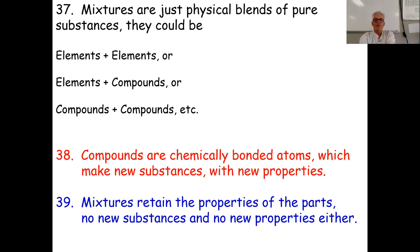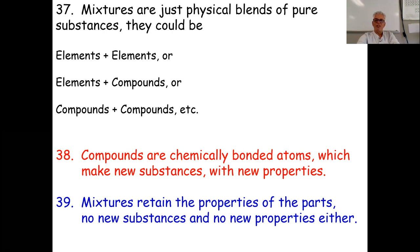Mixtures are just physical blends of stuff. A compound, on the other hand, is chemically bonded — atoms are bonded together. For methane, CH4, one carbon bonds to four hydrogens. Methane has certain properties: it burns, it's a gas at room temperature, very low density — completely different than the properties of carbon, which is a black solid non-metal, or hydrogen, which is a fairly reactive, invisible gas lighter than air. Methane is not lighter than air, so totally different properties.